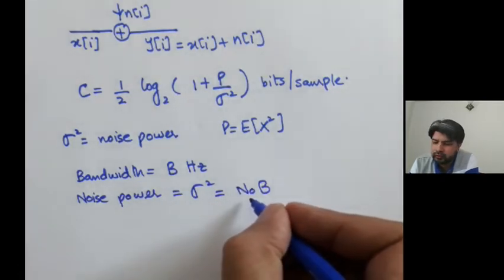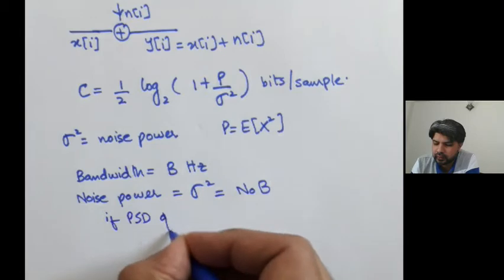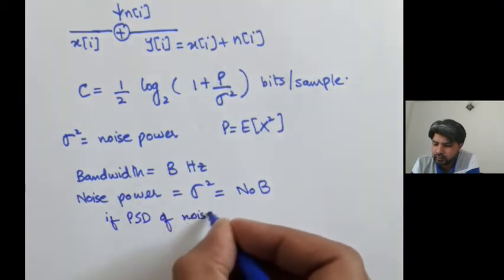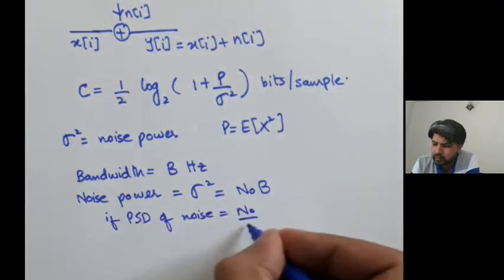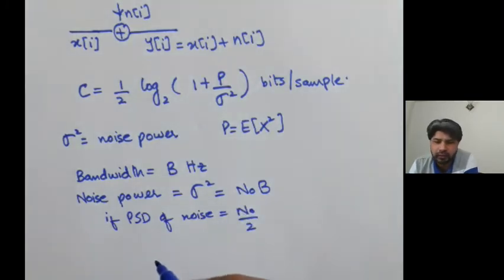So that is for a noise having a power spectral density of N naught by 2. And the channel bandwidth is B, so N naught B would be the power in the noise.